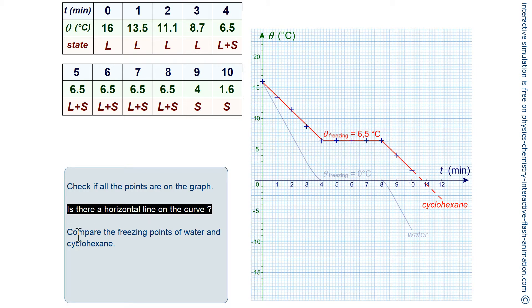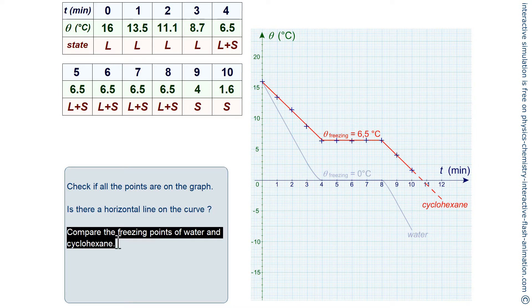Now, is this level the same for water and for cyclohexane? Well no. If water solidifies at 0 degrees Celsius, cyclohexane is at 6.5 degrees Celsius, a positive temperature.